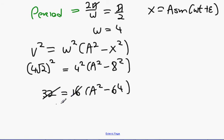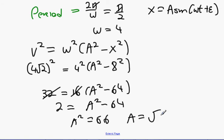Multiply everything out. We're going to get 32 equals 16a² minus 64. 32 divided by 16 is 2. 2 equals a² minus 64. a² is going to equal 66. a is going to be the square root of 66.